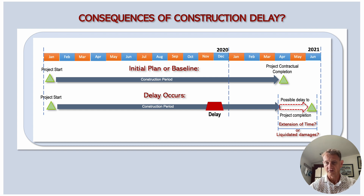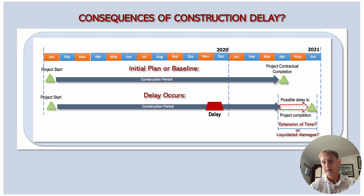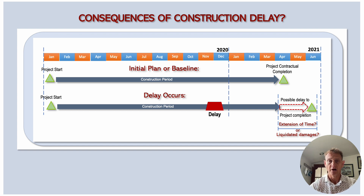Why is this important? For owners, it's important to have the project completed by a specific time — if it's not completed there might be damages, for example loss of rental income. For the contractor, it costs money to operate construction on site, so being there longer than planned means additional costs. Most construction contracts include a provision for liquidated damages to protect the owner against the risk of the project being completed later than planned. In essence, if the contractor does not complete the project in time, they would need to pay a certain amount to the owner for damages.